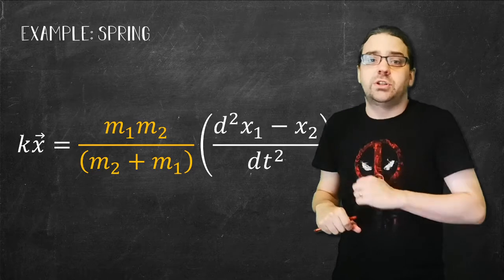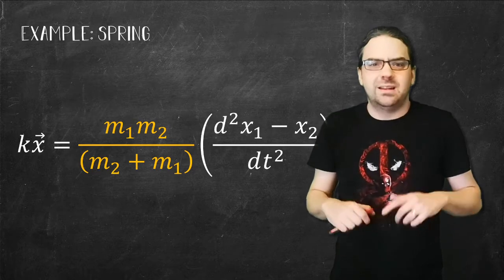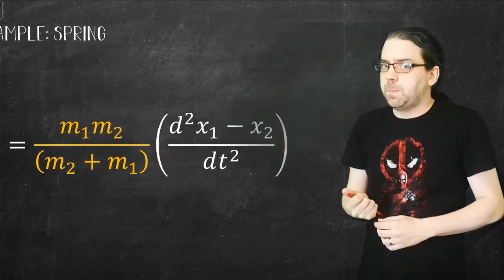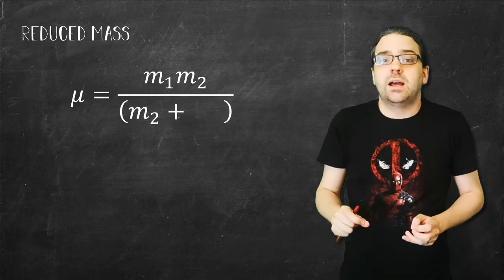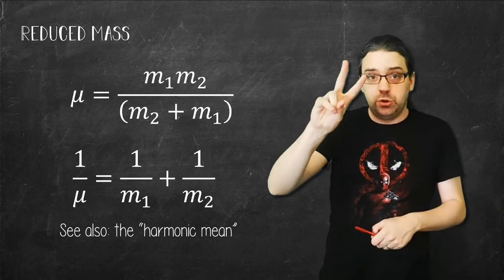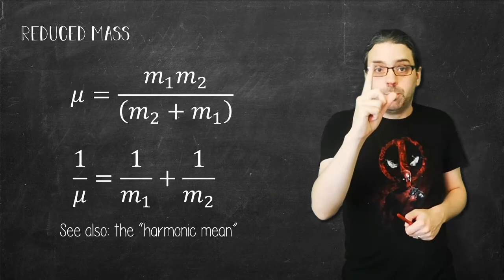And that acceleration multiplied by mass, or at least something that has the same dimensions of mass if you follow through with the units. The value here is known as the reduced mass, and it's called this because it reduces a two-body problem to a one-body problem.